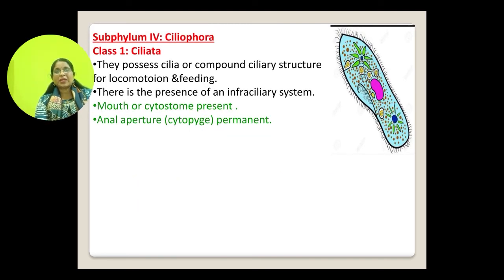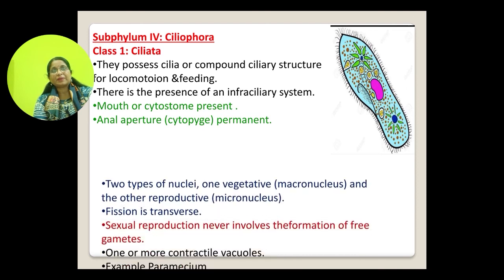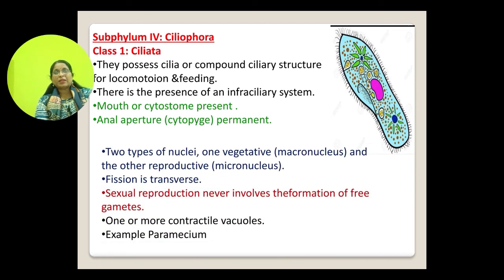Subphylum Ciliophora has one class, Ciliata, with the example Paramecium. They possess cilia or compound ciliary structures for locomotion and feeding, and there is presence of an infraciliary system. A mouth or cytostome is present, and a cytopyge is also present which is permanent.